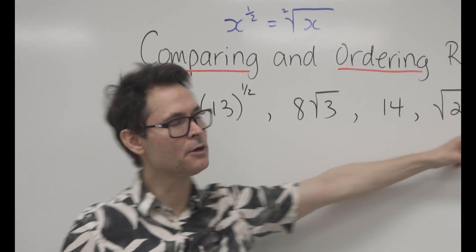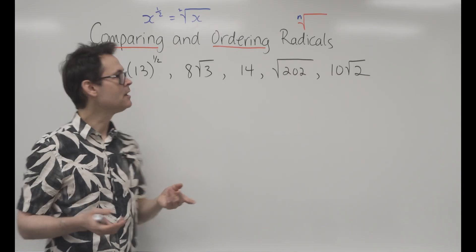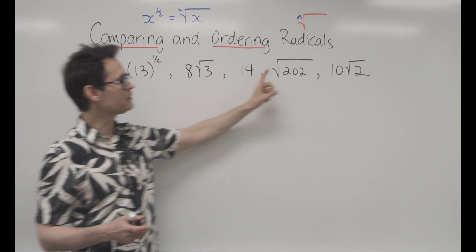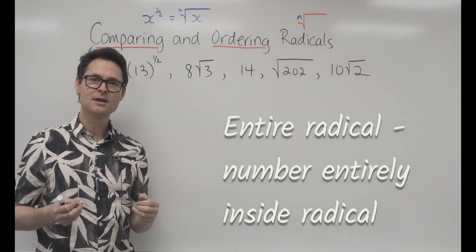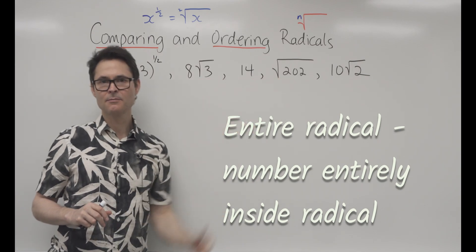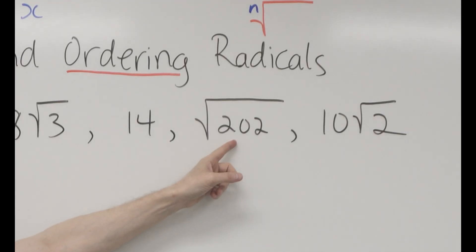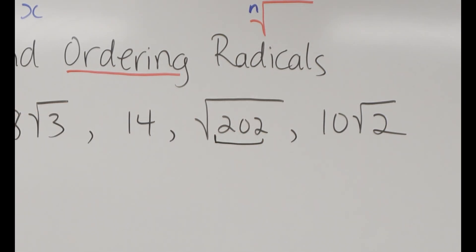In order to compare them, I'm going to use entire radicals. So I'm going to take each of these particular numbers and write them as radicals, but entire radicals where all of the number will be under the radical, so then it's easy to compare them. Notice this one's already an entire radical because all of the number is entirely inside.